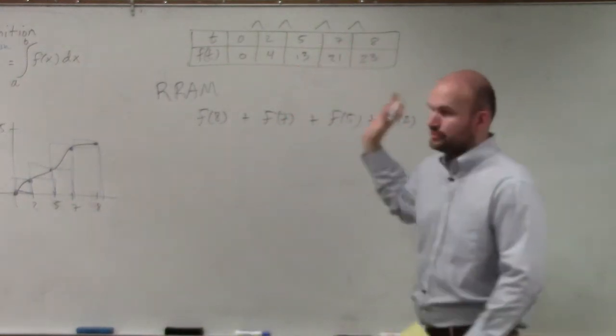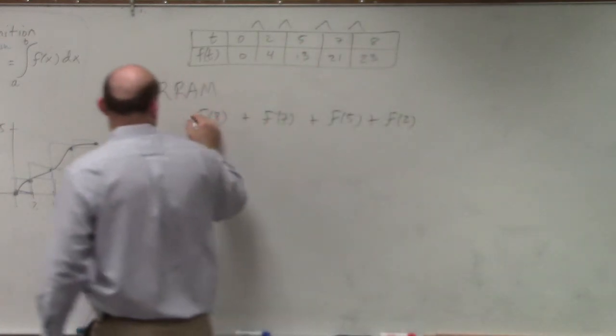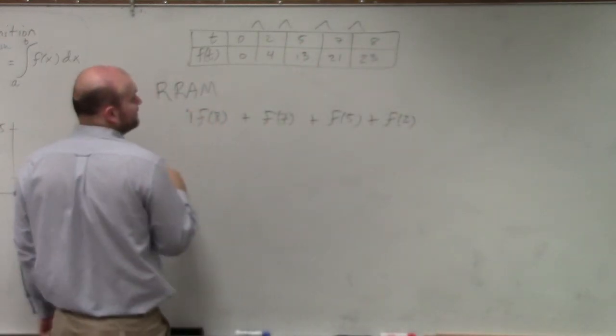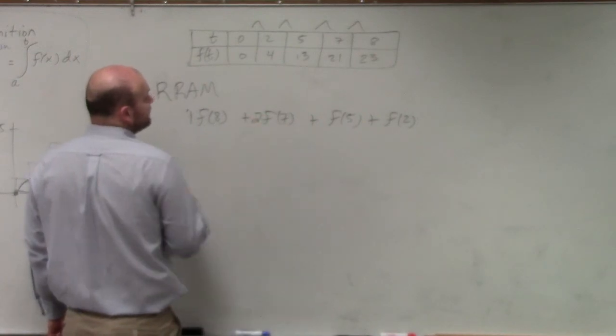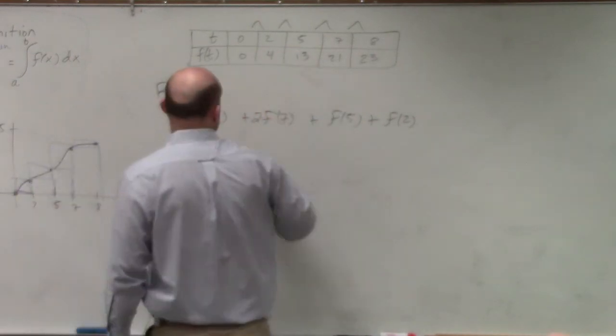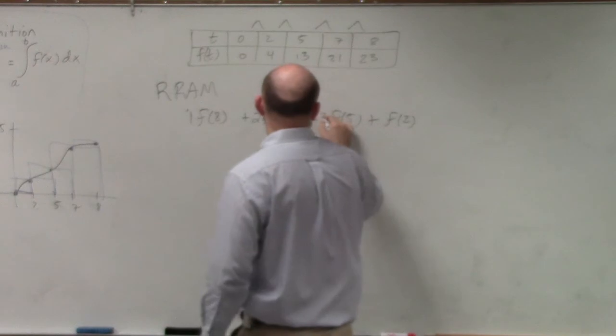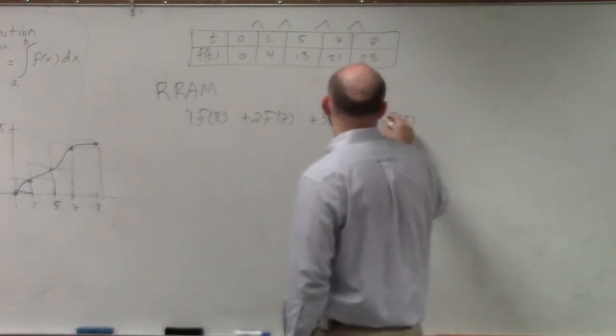And that's going to be your 2 and then pushing over to the right. So from 8 to 7, we're multiplying by a width of 1. From 7 to 5, you're going to go to 2. From 5 to 2, you're going to go from 3. And then from 2 to 0, you have 2.